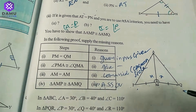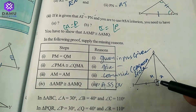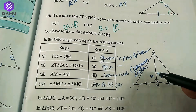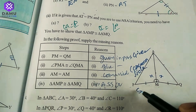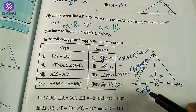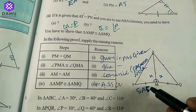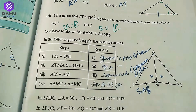So we have side, angle, side — by the SAS congruency criterion, the two triangles are congruent to each other.